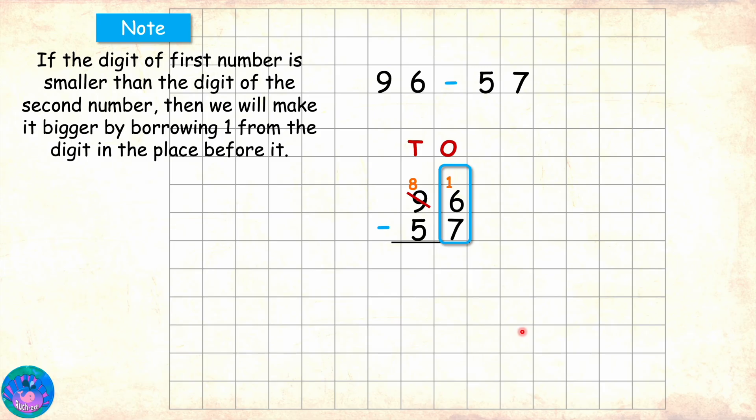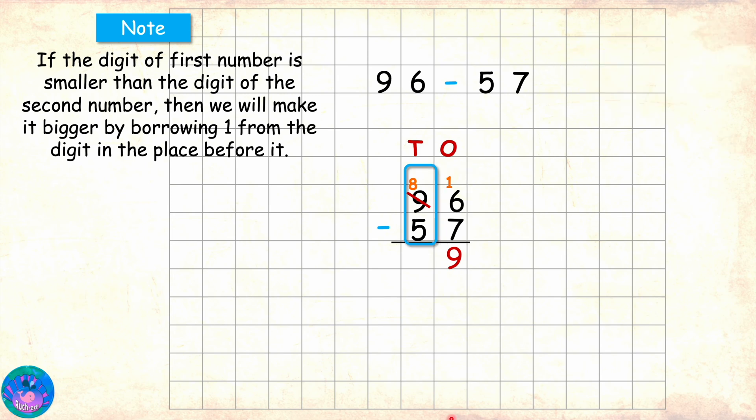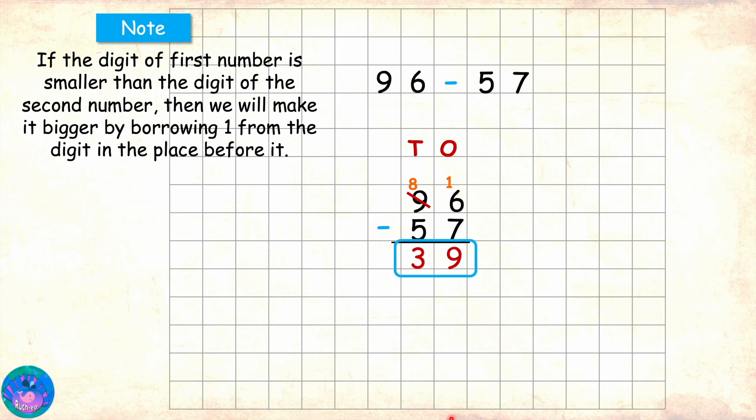Correct Sam. Now let's continue with the subtraction. In ones place, we now have 16 minus 7 which is 9, so that is the ones digit answer. Now we move to the 10th digit. Here we now have 8 minus 5 which is 3. Correct. So 3 is the 10th digit of the answer. And 96 minus 57 is 39.